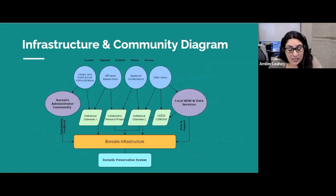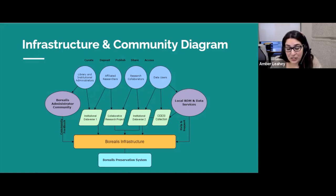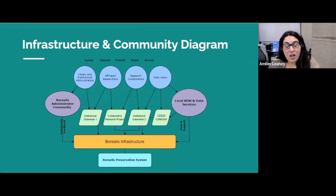Borealis connects institutional library and RDM support administrators to institutional collections where affiliated researchers, research collaborators, and data users can get assistance with data curation, deposit, publishing, sharing, and accessing research data. The repository is structured into institutional collections with sub-collections and datasets, as well as sponsored collaborative research project collections and curated library data collections. It connects users to local RDM and data services, and through the Borealis administrator community, institutional administrators come together to share RDM expertise and knowledge.